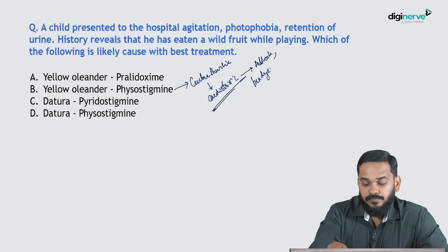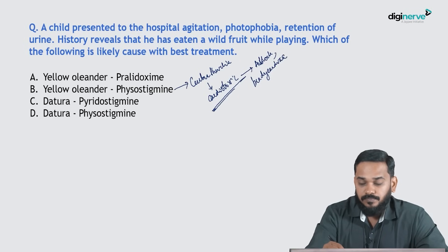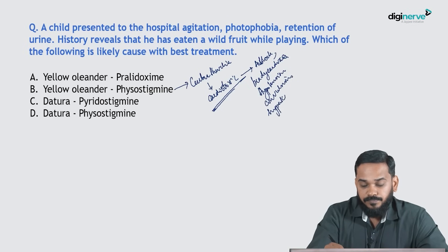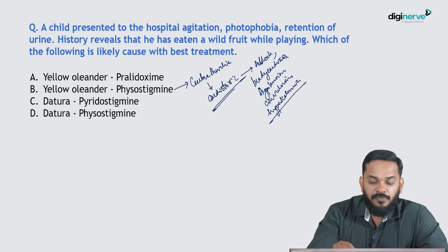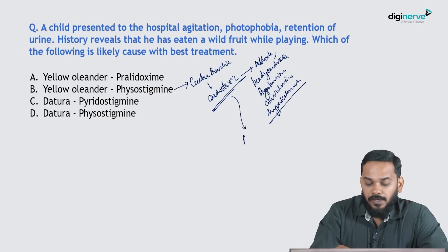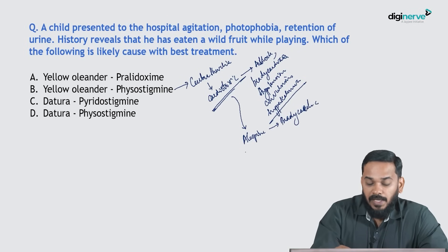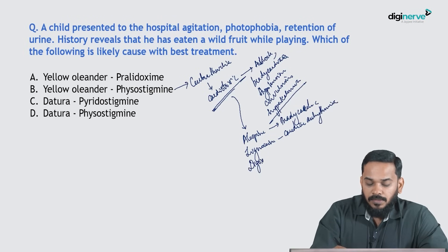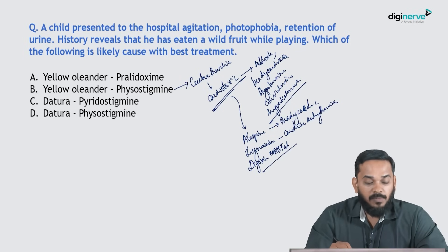Yellow oleander poisoning produces bradycardia, hypotension, convulsions, and hyperkalemia. Treatment of yellow oleander poisoning includes atropine for bradycardia, lignocaine if the patient has cardiac arrhythmia, and digoxin-specific monoclonal antibody Fab fragments, which are also used in its treatment.